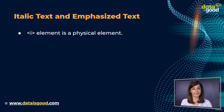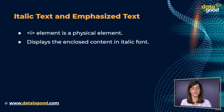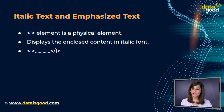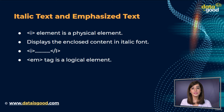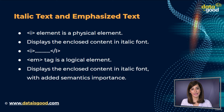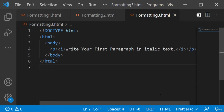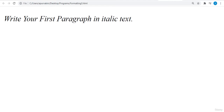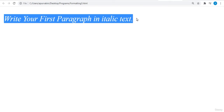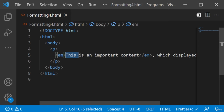Italic text and emphasized text. The HTML `<i>` element is a physical element which displays the enclosed content in italic font without any added importance. The HTML `<em>` tag is a logical element that displays the enclosed content in italic font with added semantic importance. Here's an example of italic text — we are using the `<i>` tag on a paragraph. Let's see the output. You can see the text is italic in the browser.